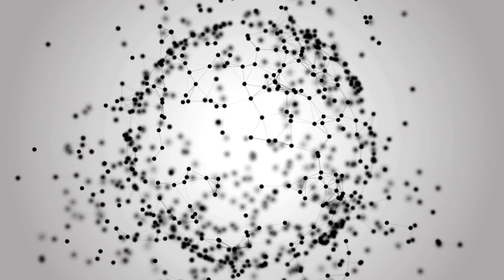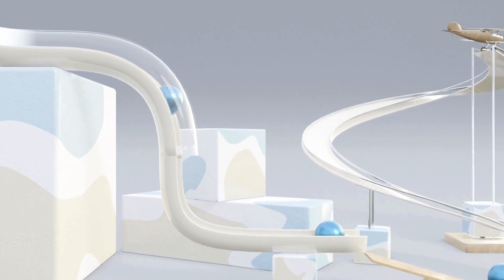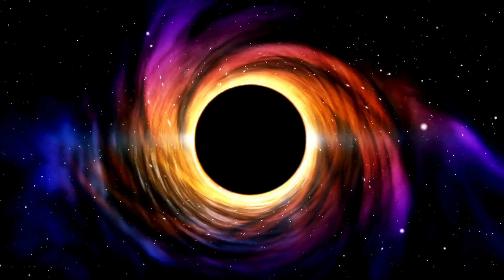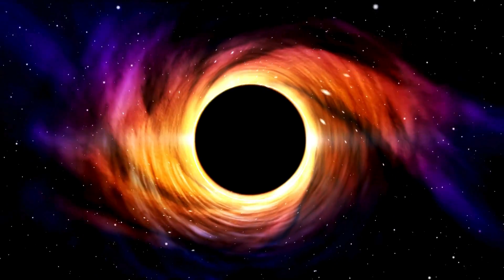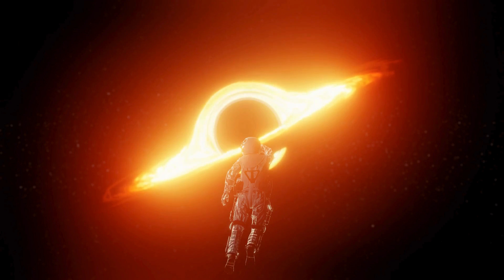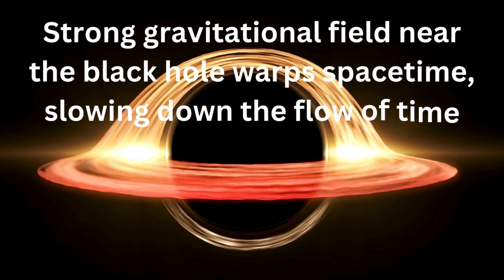In summary, time is a complex and multi-dimensional concept that we use to measure and understand change and events. It is strange but true that time can slow down or speed up. If you were near a massive object like a black hole, time would pass more slowly for you compared to someone far from the black hole. This is because the strong gravitational field near the black hole warps space-time, slowing down the flow of time.